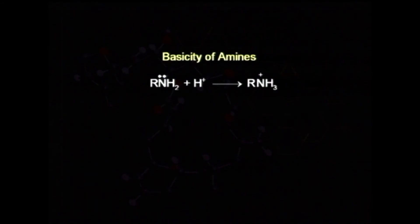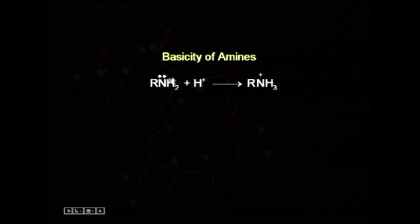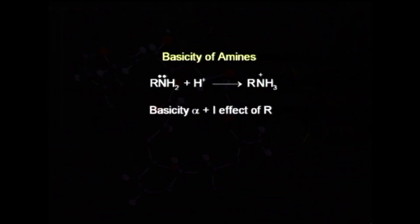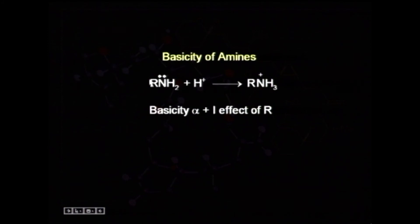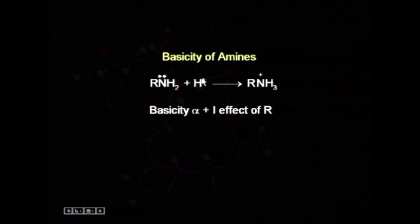Another application is understanding the basicity of amines. Basic character is the tendency to donate the lone pair of electrons towards any proton or acid. The amine is converted to the substituted ammonium ion, and basicity is proportional to the plus-I effect of the R group. Plus-I effect pushes the electron pair towards the nitrogen atom, making the lone pair more available for donation and increasing basic character.